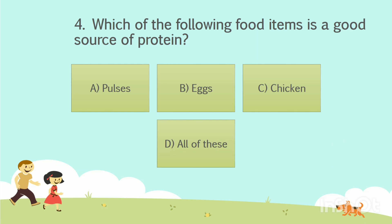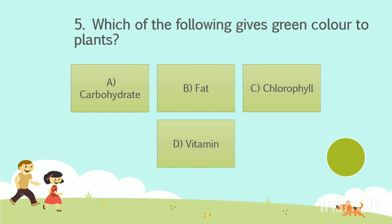The answer is Option D: All of these. Question number 5. Which of the following gives green color to plants? Option A: Carbohydrate. Option B: Fat. Option C: Chlorophyll. Option D: Vitamin. Your time starts now.